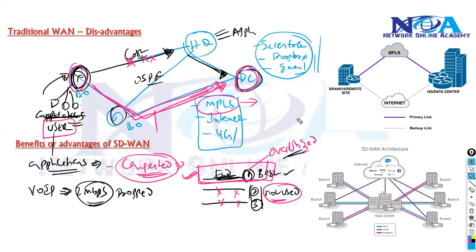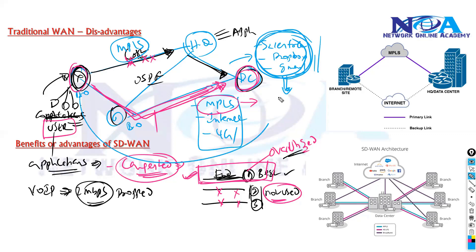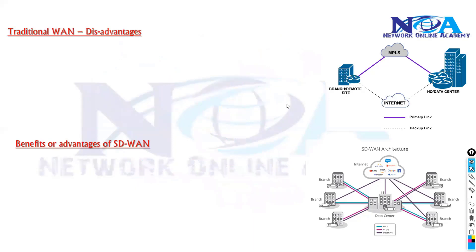These cloud-based applications reside in data centers and should be accessible from anywhere on the internet. They don't use the traditional MPLS network — they use the internet to be accessed. So most of these applications can get impacted because of the traditional WAN architecture.